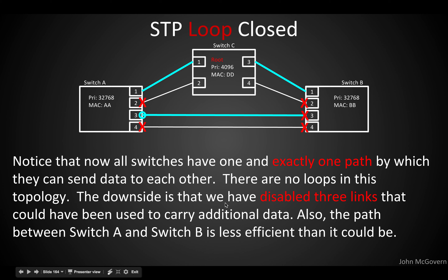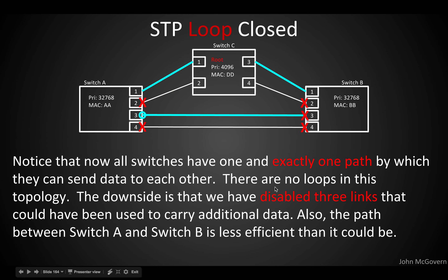We've disabled a lot of links. Also notice that the direct path between switch A and switch B is blocked — we had to block that port to close our loop. So now if switch A wants to talk to switch B, it has to go through switch C, which is a little less efficient.